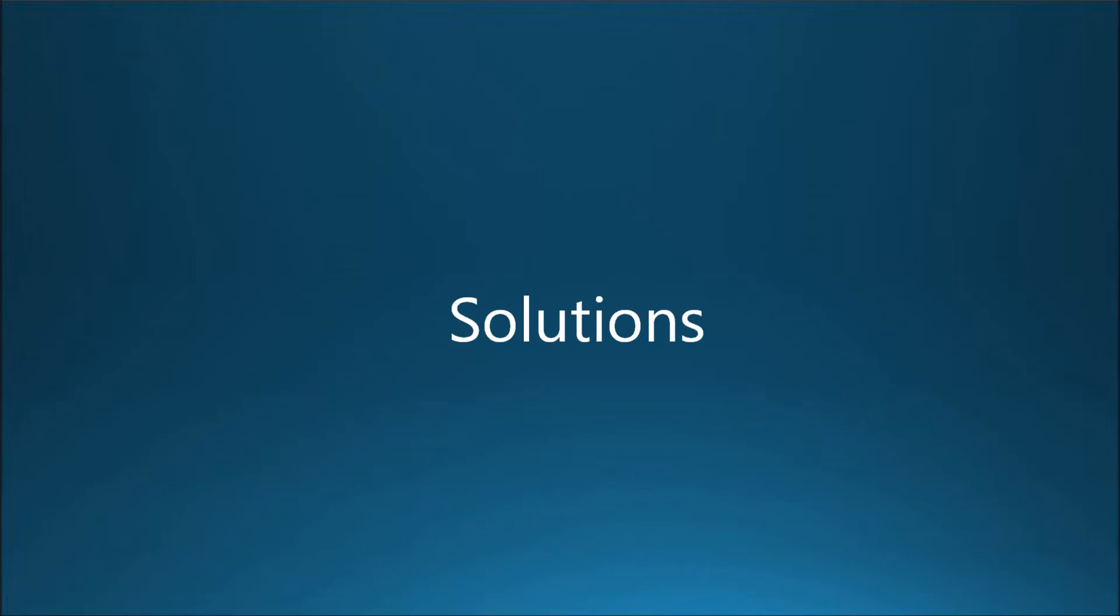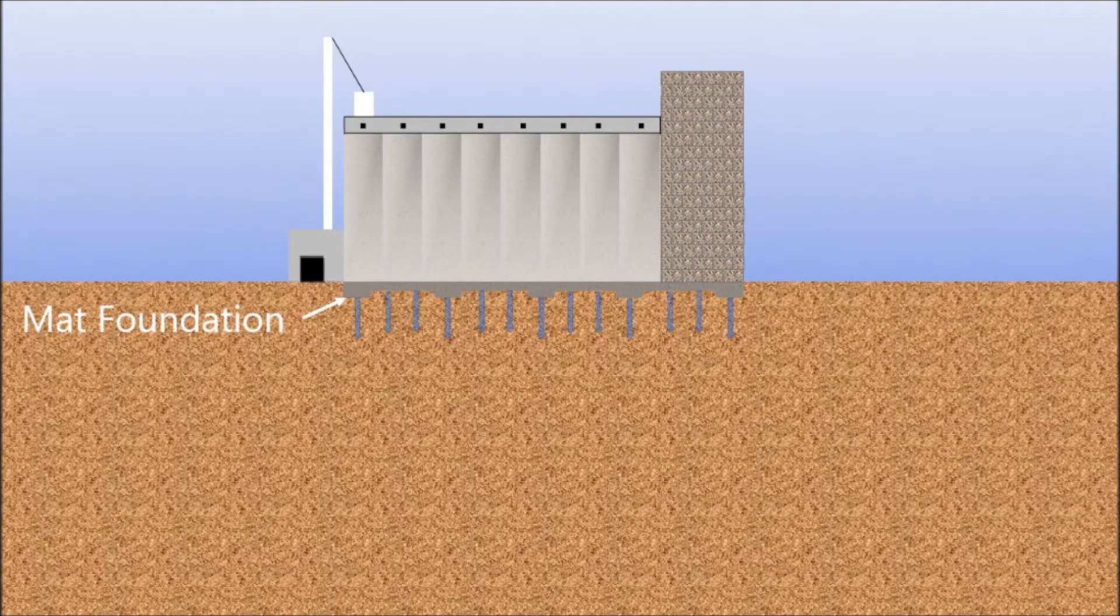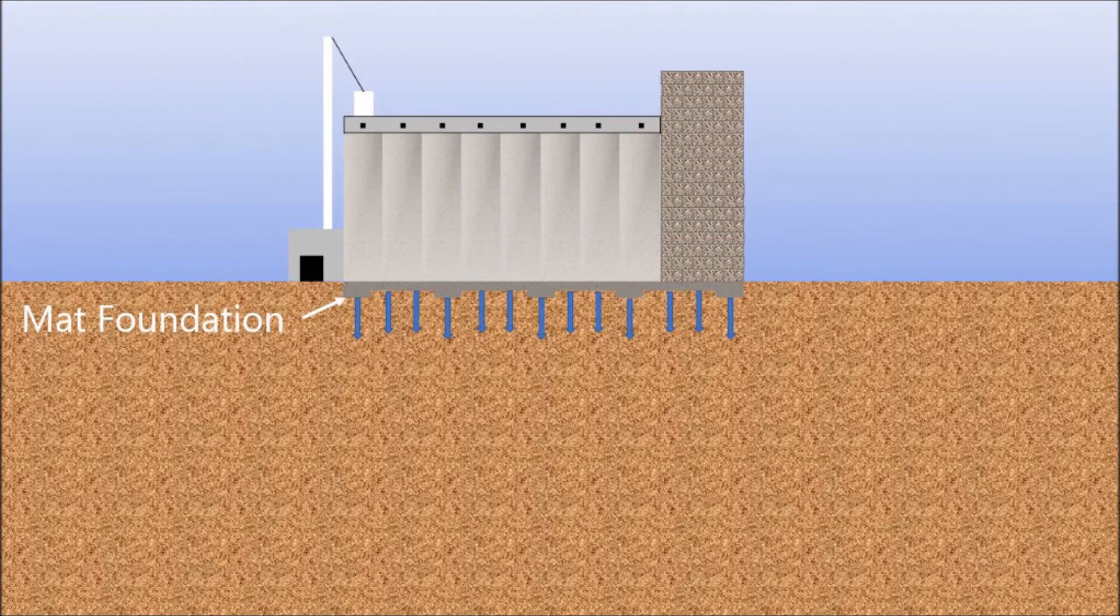Engineers have developed methods to safely support structures and transfer loads in soils with low or insufficient bearing capacities. One method is to distribute the load of the structure over a larger surface area. Mat and raft foundations are used for this application and usually span the entire footprint of the structure they support.